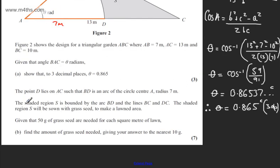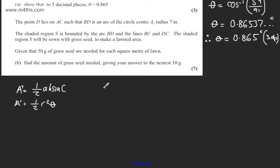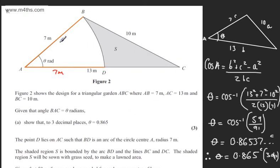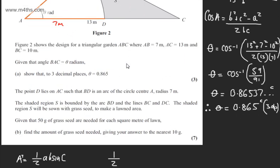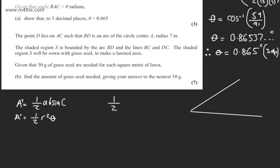We can use the formula one-half AB sin C. So the area of the triangle will be one-half AB sin C. And then the area of the sector will be one-half R squared theta. Using theta from part (a), for the triangle we're going to have one-half times 7 times 13, since those are the two sides enclosing angle theta.